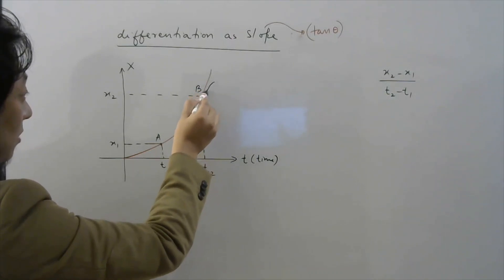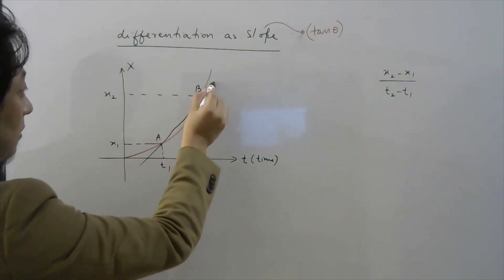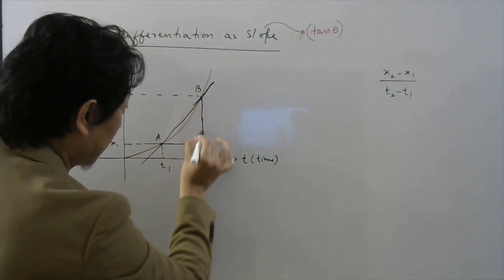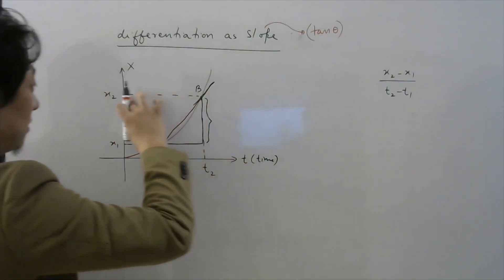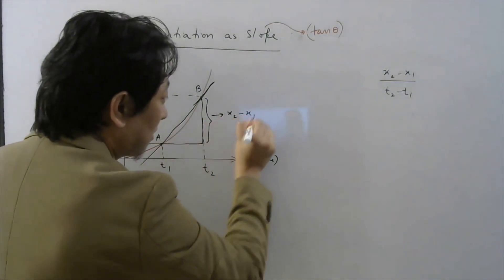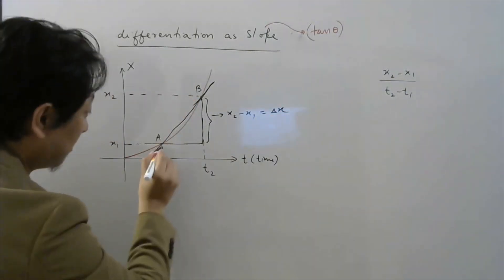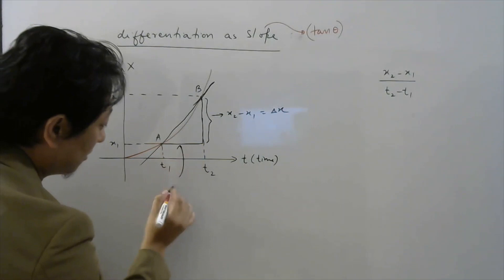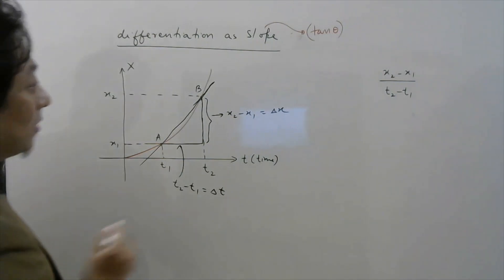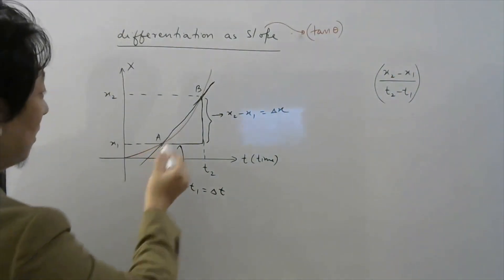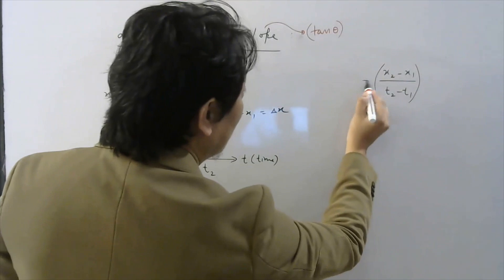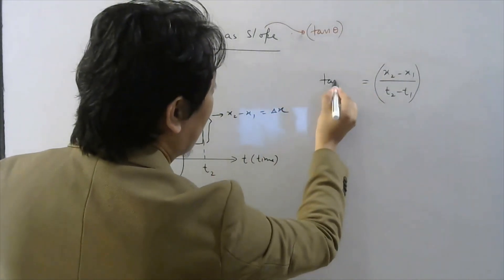Now let me draw a straight line passing through these two points. If I draw a triangle here, you can see one side of the triangle is x2 minus x1, which we can write as delta x, and the other side is t2 minus t1, which I can write as delta t. If you observe carefully, this is the average rate of change between A and B, or between t1 and t2, and this I can also write as tan of this angle.